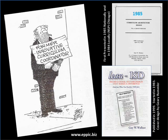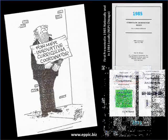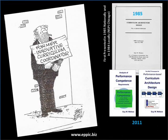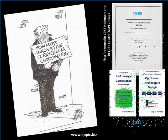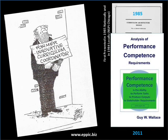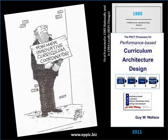What was innovative back in 1984 was the approach using a group process that would establish the customer and client's ownership of the products of a curriculum architecture design effort. This includes curriculum, instruction, training, learning, and even knowledge management. I first presented on curriculum architecture design via a group process at the NSPI conference in 1985. My book, almost 20 years in the making, Lean ISD, was finally published in 1999. In 2011, I updated the Lean ISD book into a configuration of several books, two of which focus specifically on curriculum architecture design.